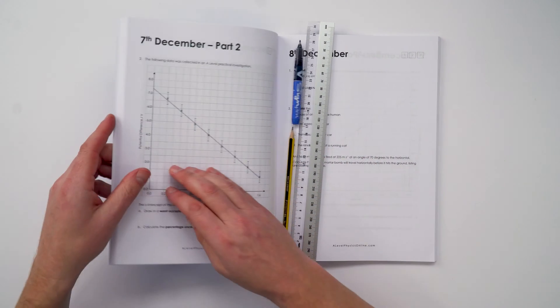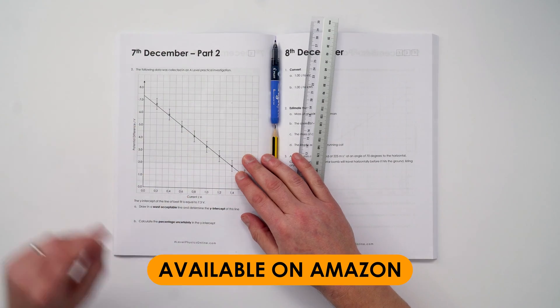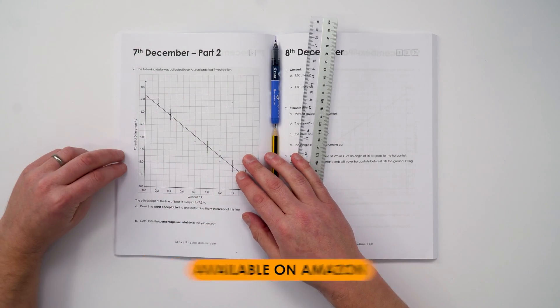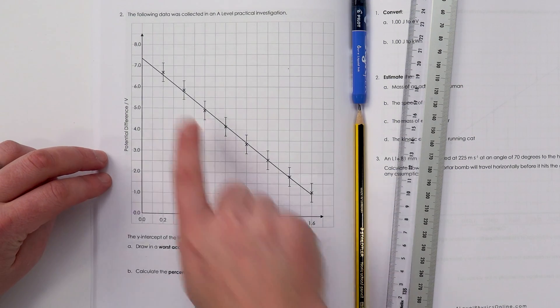Here is your daily question for A-Level Physics for the 7th of December, and this is actually part two in the book. We've got some data which has been plotted here, and we need to draw in the worst acceptable line and determine the y-intercept.